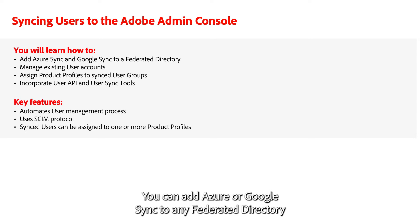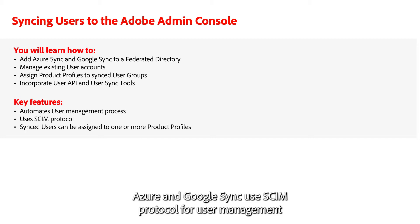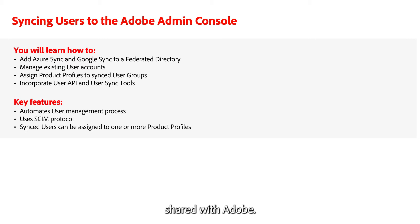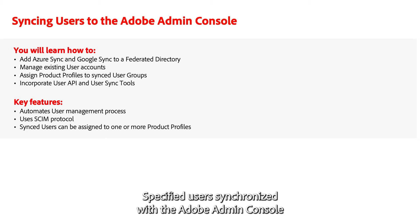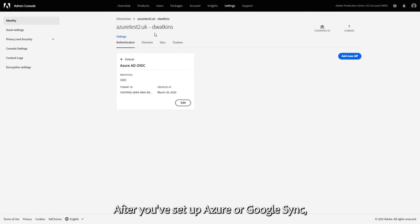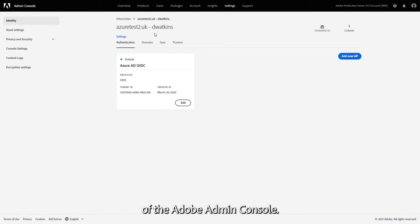You can add Azure or Google Sync to any federated directory in the Adobe Admin Console to automate your user management process. Azure and Google Sync use SCIM protocol for user management and gives you control over user and group information shared with Adobe. Specified users synchronized with the Adobe Admin Console can be assigned to one or more product profiles. After you set up Azure or Google Sync, data is sent to the Adobe Admin Console as per the directory's user and group provisioning. You can see the directory details in the Settings tab of the Adobe Admin Console.